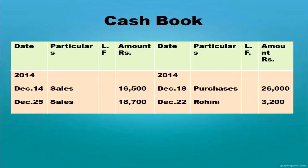December 25th cash sales made again — cash account debit to sales, receipts coming inside the business, written on the debit side to sales, amount 18,700. Then cash paid to Rohini — Rohini is the receiver of cash, so Rohini debit to cash; on the payment side, 'By Rohini' with date and amount. Some more transactions: cash deposited into bank — bank account debit to cash; rent paid — rent account debit to cash; salary paid — salary account debit to cash. All posted on the credit side.